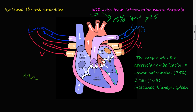25% of this 80% come from mitral valve disease. When the mitral valve is not functioning properly, the left atrium begins to dilate and become larger, which disrupts blood flow. According to Virchow's Triad, one of the ways blood clots form is through turbulent blood flow or stasis. As the left atrium dilates, it becomes prone to forming blood clots, so 25% come from the left atrium secondary to mitral valve disease.